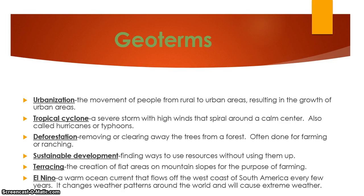Terracing: the creation of flat areas on mountain slopes for the purpose of farming — this looks like steps at the side of a mountain. El Nino: a warm ocean current that flows off the west coast of South America every few years. It changes weather patterns around the world and will cause extreme weather. This concludes lesson six, Latin America.